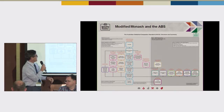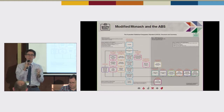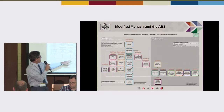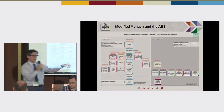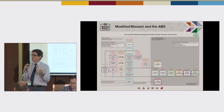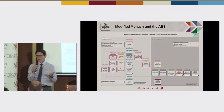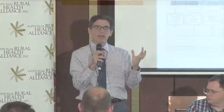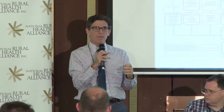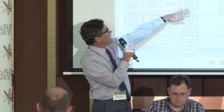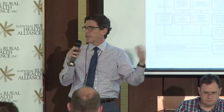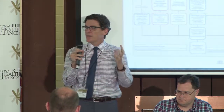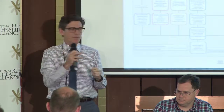SA2s are the next level up — aggregations of SA1s. We build a couple of SA1s together to make SA2s, so they're between 3,000 and 25,000 people. It's the unit we generally produce population estimates for between censuses. SA3 and SA4 build up from there into larger and larger areas. SA4s are designed for release of labour force survey data, requiring enough sample to produce reliable estimates.